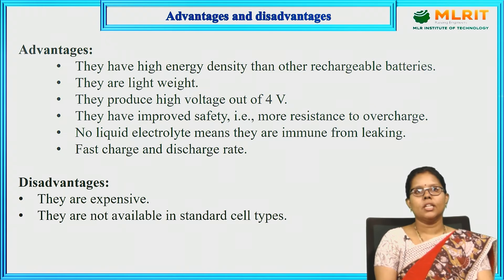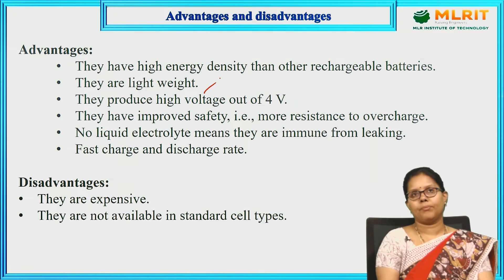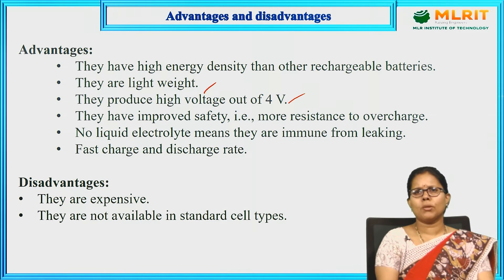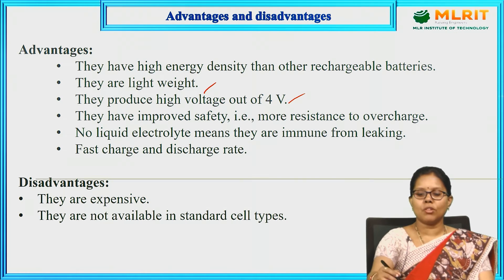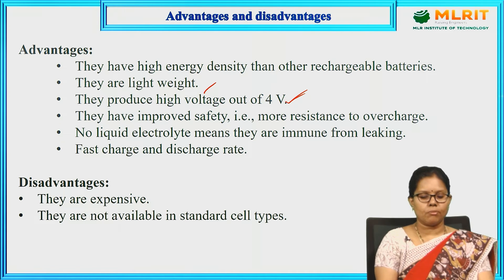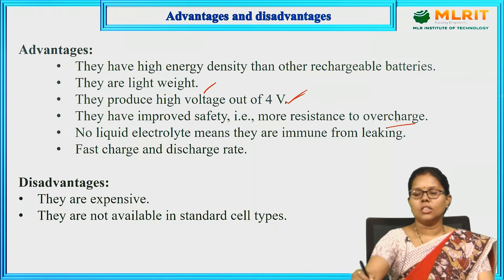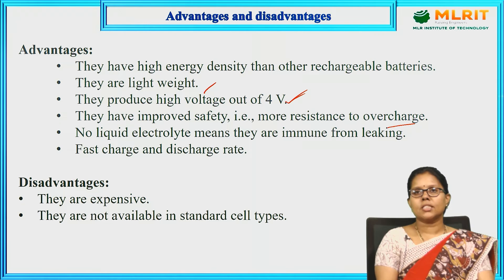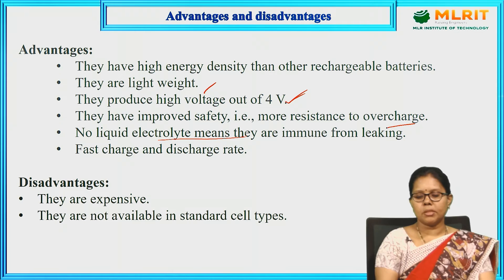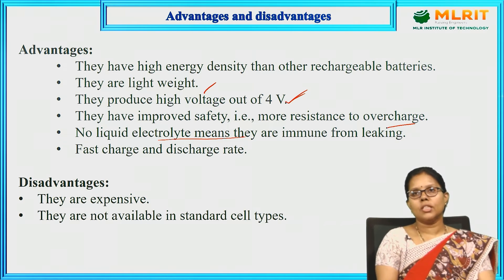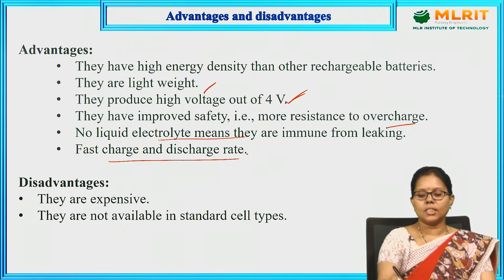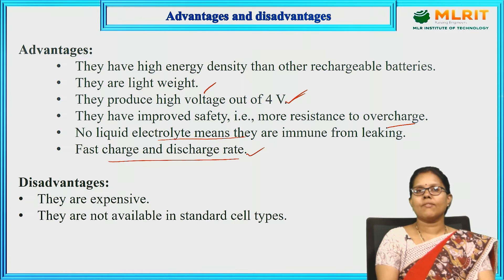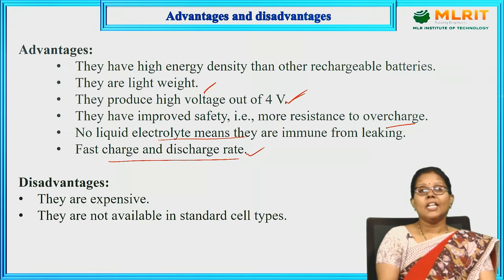Advantages: Lithium ion batteries have very high energy density compared to any other rechargeable batteries. They are lightweight. They produce a high voltage of about 4 volts — whereas a nickel cadmium battery produces 1.5 to 2 volts, one lithium metal ion battery replaces two cells. They have improved safety with more resistance to overcharging. Using non-aqueous electrolytes means there is no leakage and no bulging. They have fast charge and discharge rates and a good shelf life.